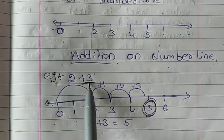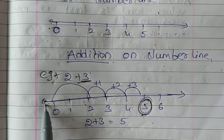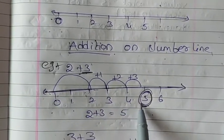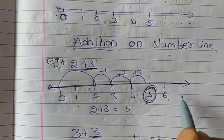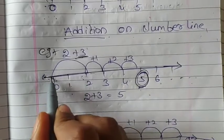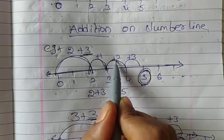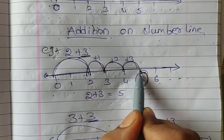We have to take 2 plus 3. It is a number line 0, 1, 2, 3, 4, 5, 6 up to so on. 0 to 2 is 1 plus 1, 2 plus 1, 2 plus 2, 2 plus 3.